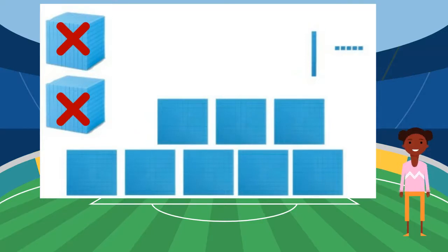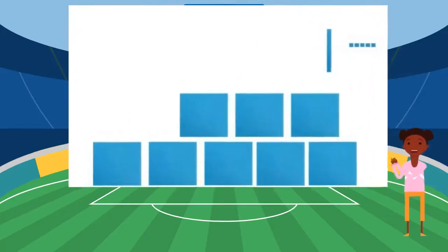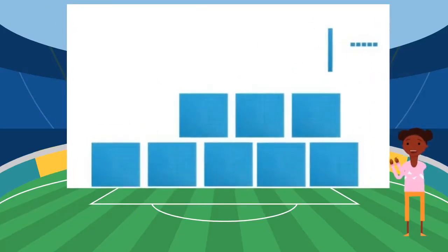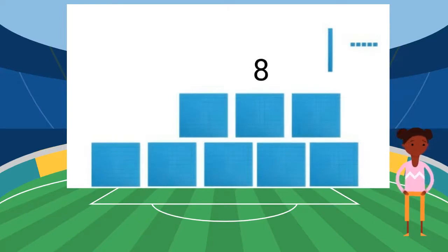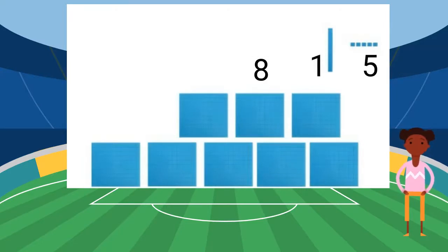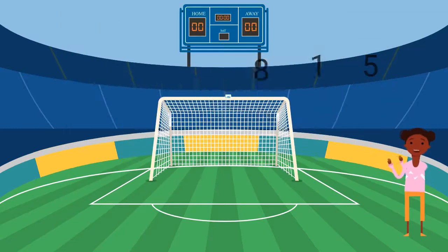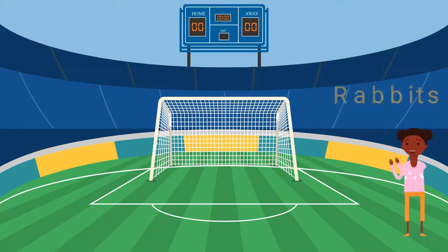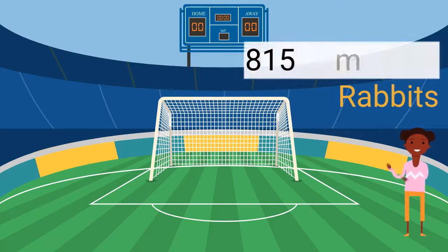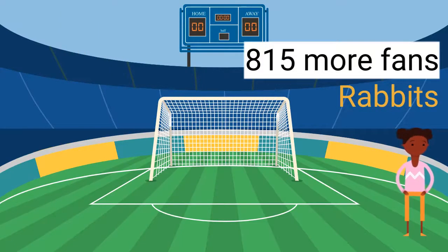Let's look at what is left. This will tell us the difference between the Turtle fans and the Rabbit fans. We have eight hundreds, one ten, and five ones. That is 815. The Rabbits had 815 more fans here today.